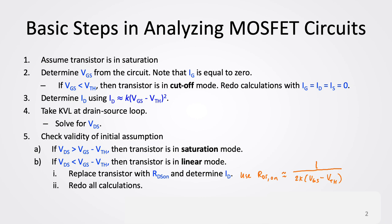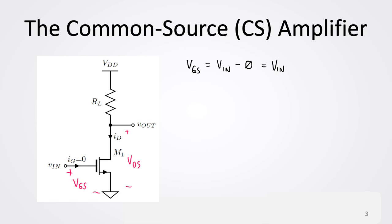The most basic MOSFET amplifier we're going to look at is the common source amplifier. It is considered common source in topology because the input is at the gate and the output is at the drain. The source terminal is grounded, so it is common to the input and the output.